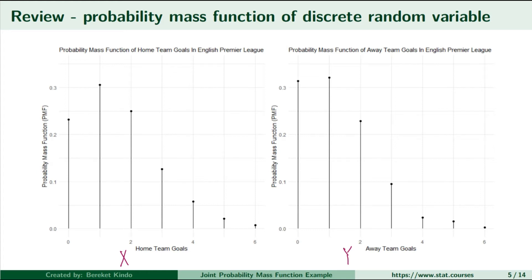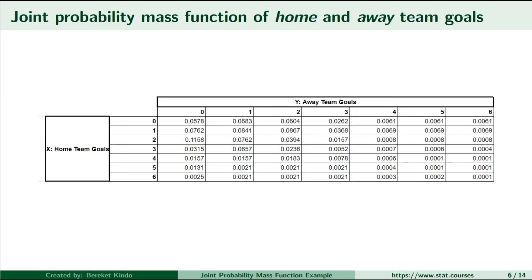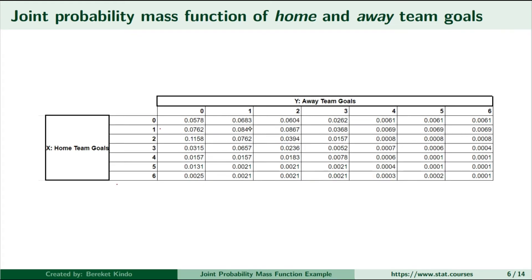Now let's get to joint PMF. Of course, you can view the distribution of goals by the home team and the away team — the two random variables — separately. However, you uncover more interesting insights by analyzing how these two random variables behave jointly. Here's a table that has the joint PMF, the joint probability mass function of these two random variables. Each cell in this table represents the joint probability of observing a specific value little x and some specific value little y. I'm using little x and little y to represent observations or realizations of the random variables capital X and capital Y.